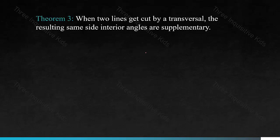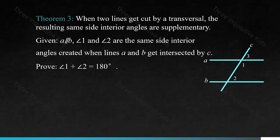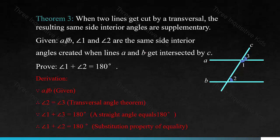Theorem 3: when two parallel lines get cut by a transversal, the resulting same side interior angles are supplementary. Given A is parallel to B, angle 1 and angle 2 are the same side interior angles created when A and B get intersected by C. Prove angle 1 plus angle 2 equals 180 degrees. Because A is parallel to B, therefore angle 2 equals angle 3 using the transversal angle theorem. Because angle 1 plus angle 3 equals 180 degrees, therefore angle 1 plus angle 2 equals 180 degrees, using the substitution property of equality.